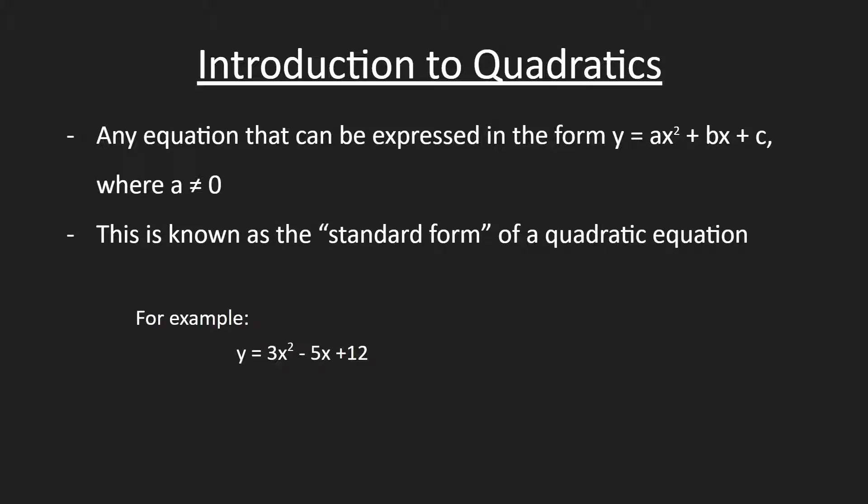This is known as the standard form of a quadratic equation. For example, if we have the equation y equals 3x squared minus 5x plus 12, a would equal 3, b would equal negative 5, and c would be 12.